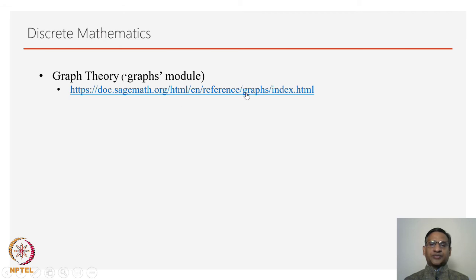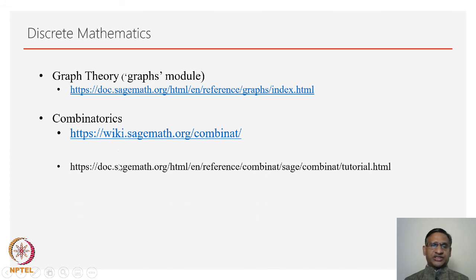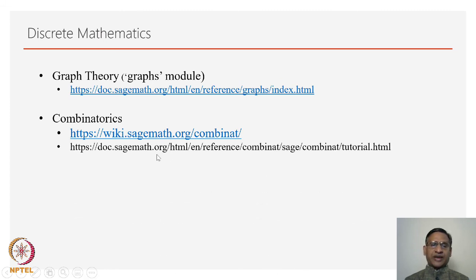You can look at the inbuilt reference manual on SageMath. You can also explore combinatorics techniques using SageMath. There is a package called combinatorics. It has a wiki site. You can go through this website, and of course Sage itself has a reference manual on combinatorics, basically in the form of a tutorial.